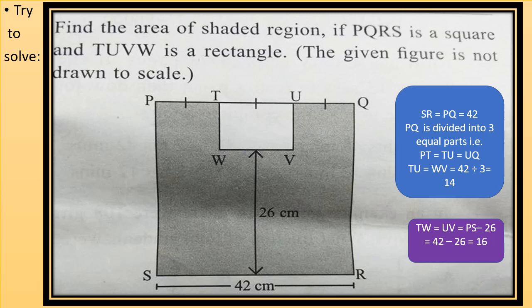Now rectangle is TUVW. So opposite sides are equal but the length is not given. So to calculate the area of shaded region we have to subtract the area of rectangle from area of square. So to calculate the area of square we have a side given 42 cm. So area of square will be 42 times 42.